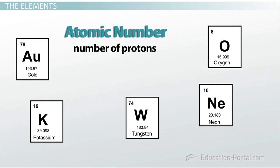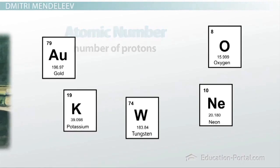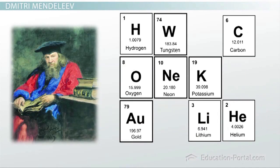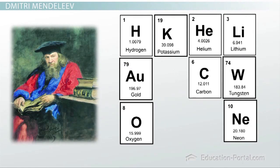Because there are so many elements, there needs to be a system of organizing them. This is where a Russian chemist by the name of Dmitry Mendeleev comes in. In the late 1800s, when only 60 or so elements had been discovered, Mendeleev decided to arrange the elements in order of increasing atomic weight.